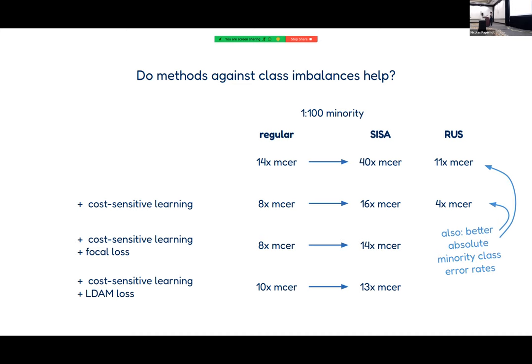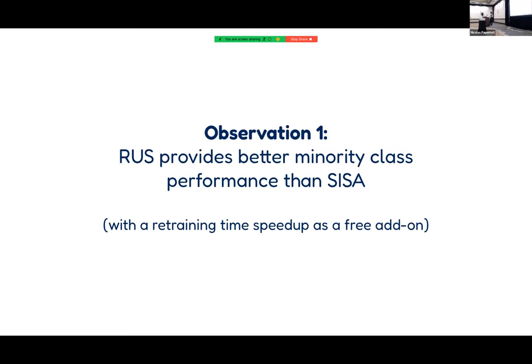If you do this, you can achieve minority-to-majority class relationships that are much better than even training just one big model in the first place. In our case, we were able to lower that relationship from 14x down to 11x or even 8x to 4x. Not only does this make performances more similar, the absolute minority class error rates also improve much more than any combination with SISA did. So observation one: random undersampling provides better minority class performance than SISA, and the retraining time speedup comes essentially as a free add-on.